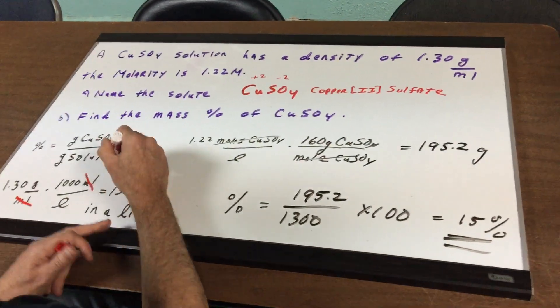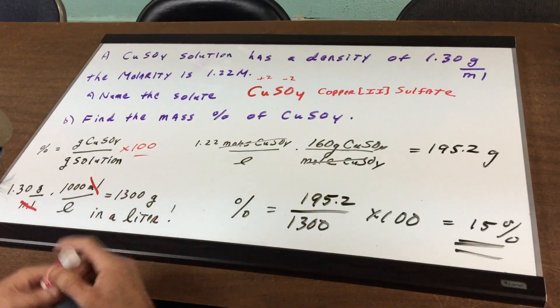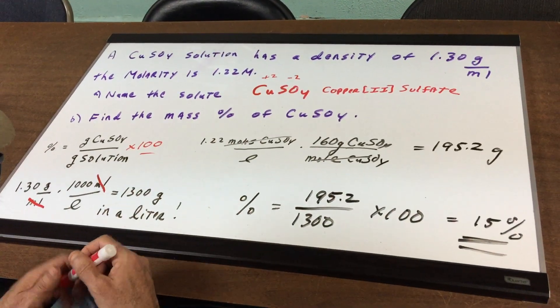So we now know the denominator. The grams of the solution—we simply multiply the density by a thousand and that gives me the grams in a liter. So far so good.